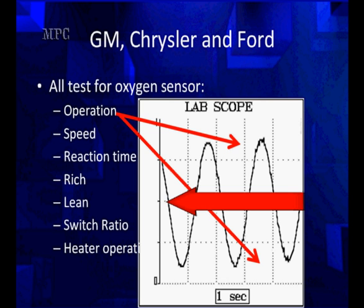What you see about this pattern is it's moving smoothly about the 0.5 volt bias. Now, we know the stoichiometric is 0.45 volts, so we can say that this pattern is moving evenly above and below stoichiometric.